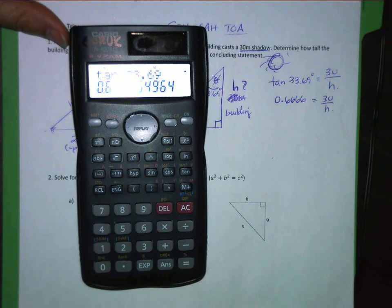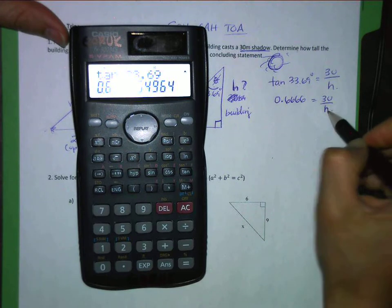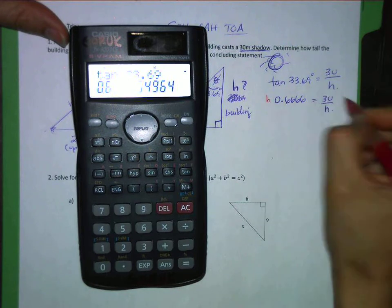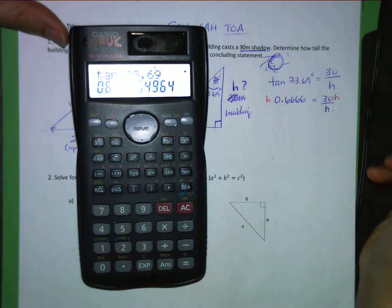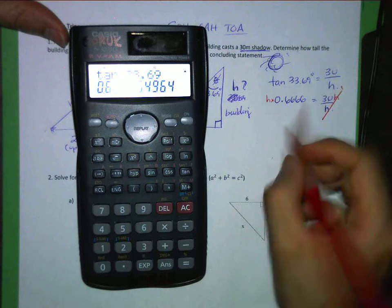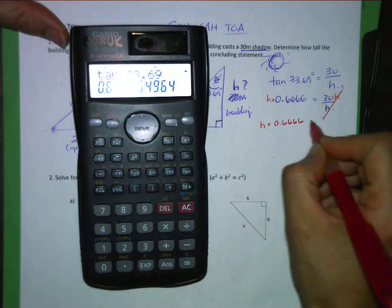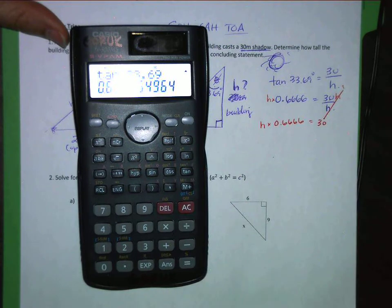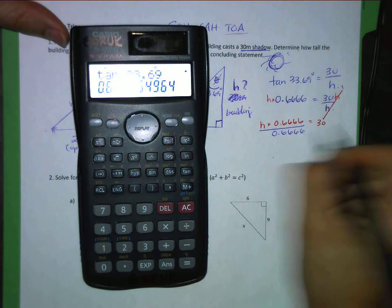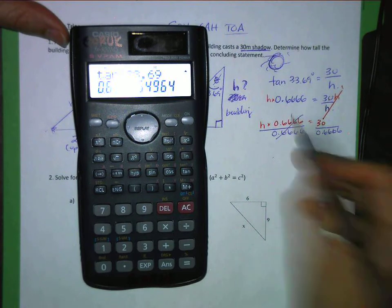Now, I need to solve for H. So that means I need it on the numerator. So I am going to multiply both sides by H because what H is doing is division. The reason I multiply both sides by H is because I want this to become one. Now, I'm left with H times 0.6666 equals 30. But I want to solve for H. So I'm going to divide both sides by that. So then on this side, they divide out and become one. And H is equal to 30 divided by 0.666.